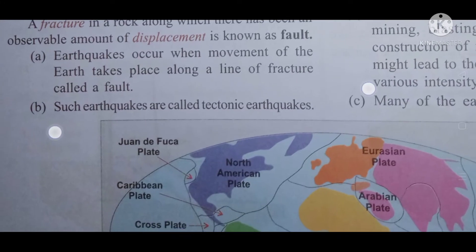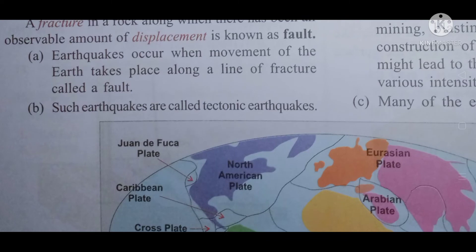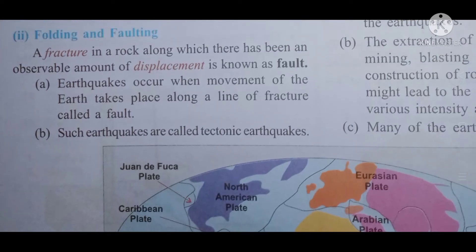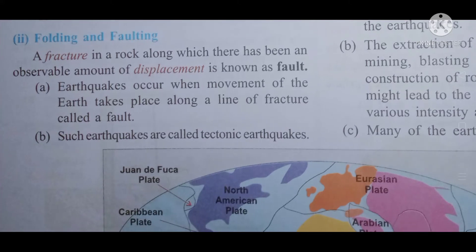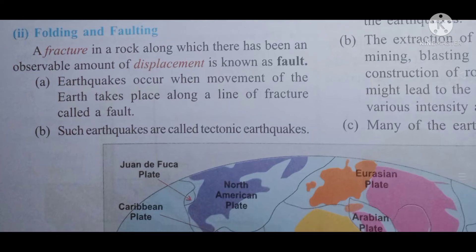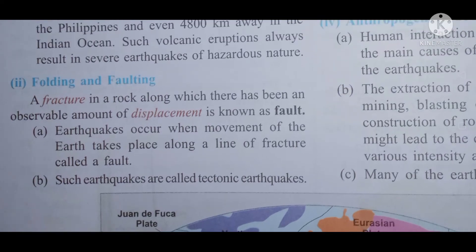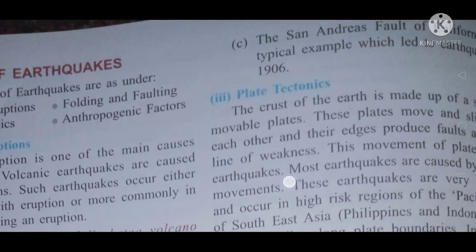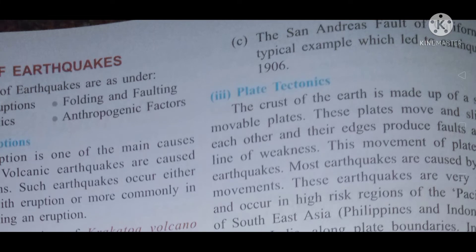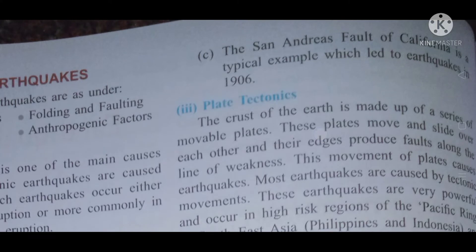Earthquakes occur when movement of the earth takes place along the lines of a fracture called a fault. Such earthquakes are called tectonic earthquakes — earthquakes that occur when movement of the earth takes place along a line of fracture called a fault.